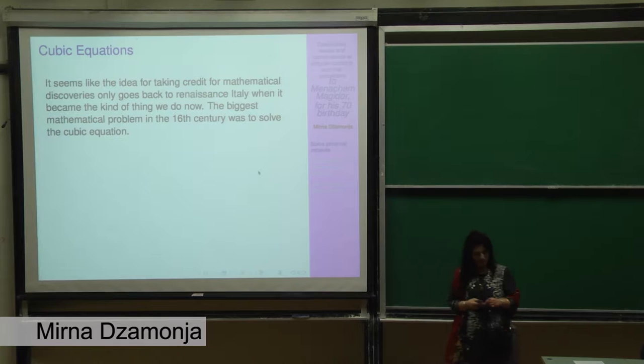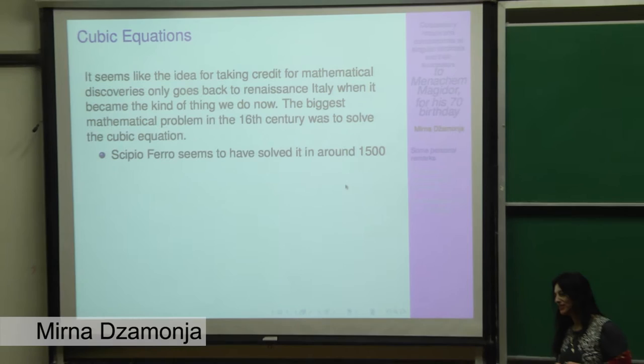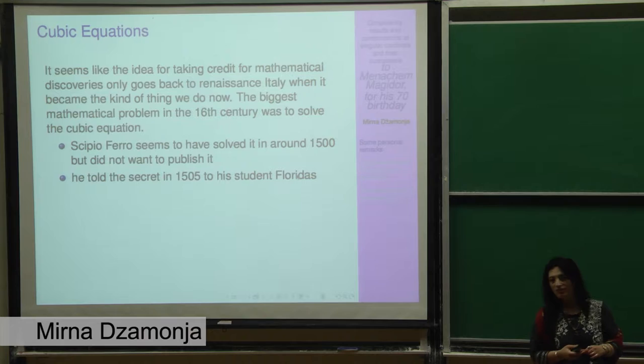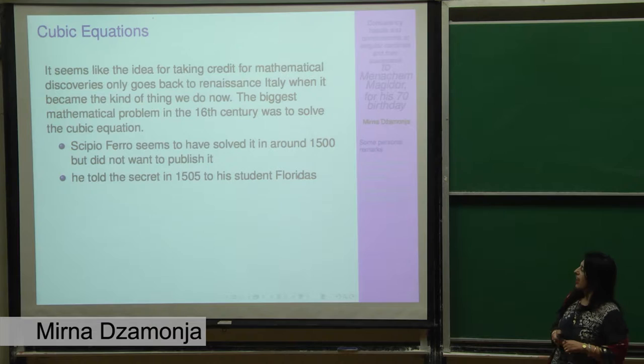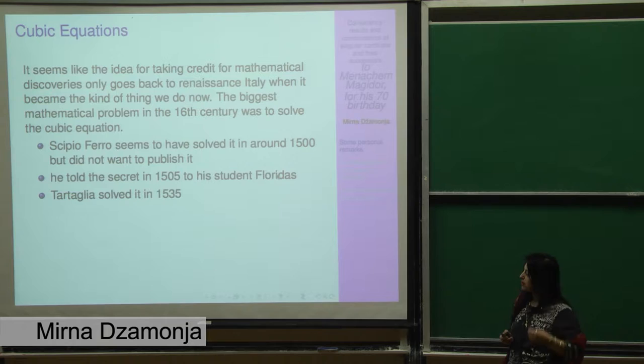It was one of the biggest problems in mathematics in the 16th century. Scipione del Ferro seems to have solved it in about 1500, but he didn't want to tell a living soul because he wanted to keep the secret for himself. But he did, at the end, tell the secret in 1505 to his student Fioridas, because Ferro was ill and he wanted the secret to be passed on.